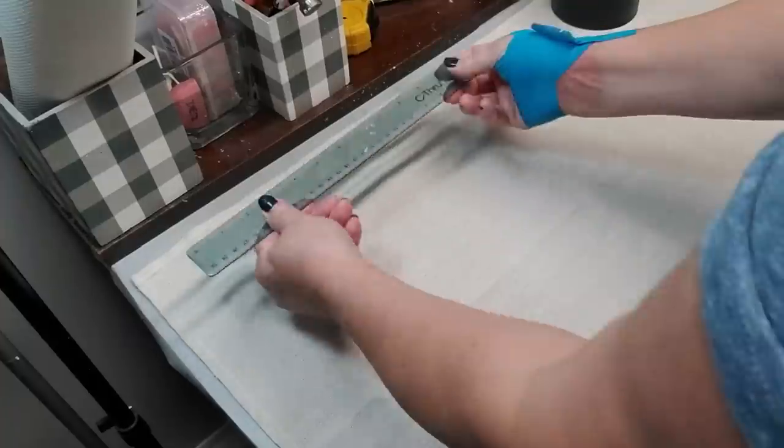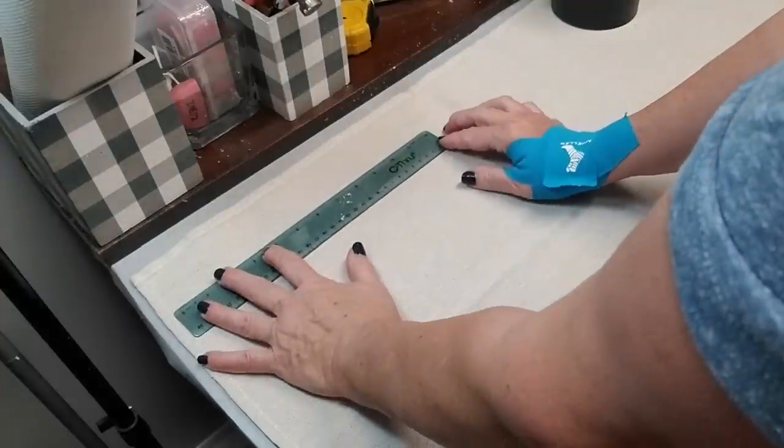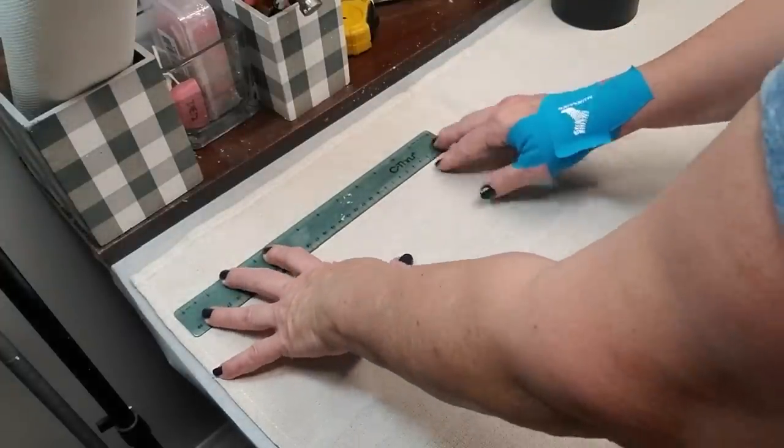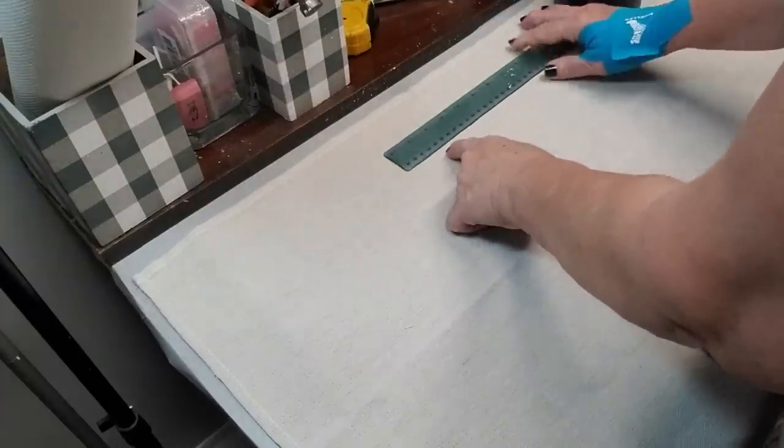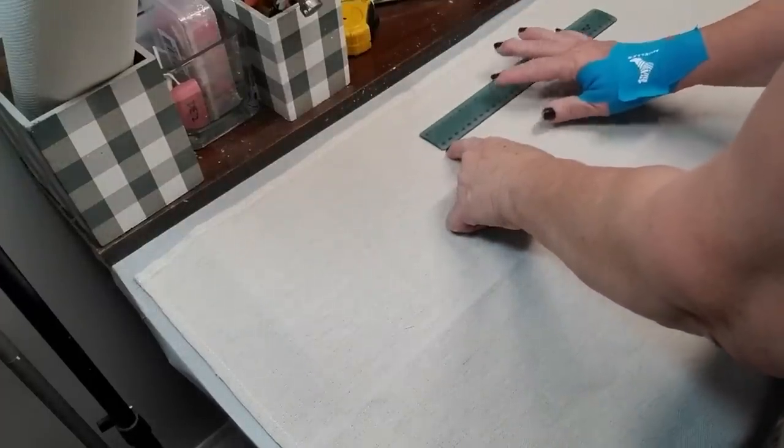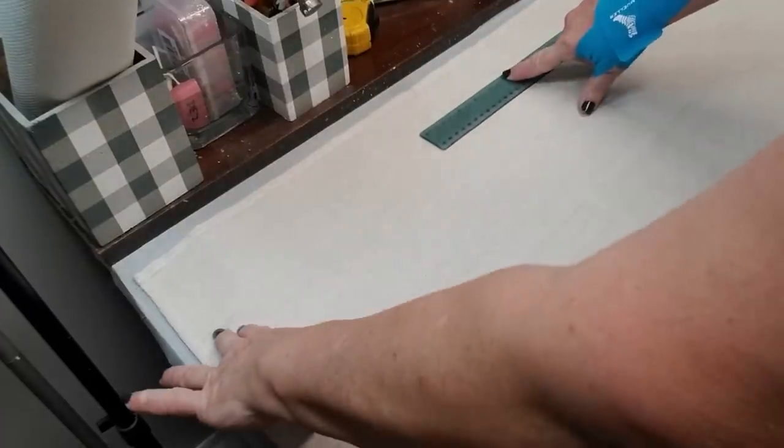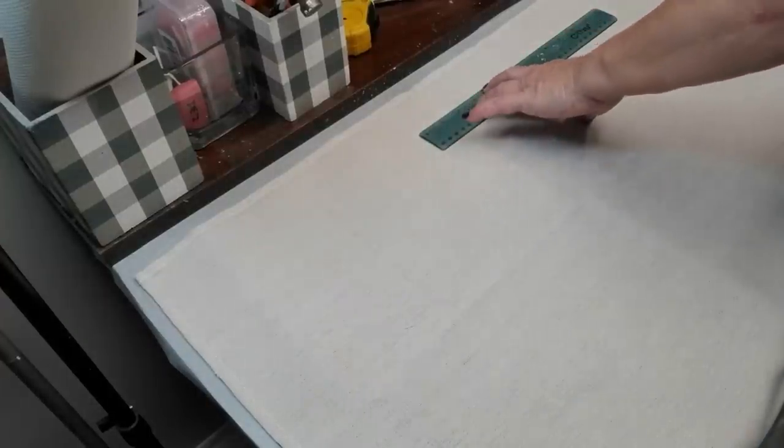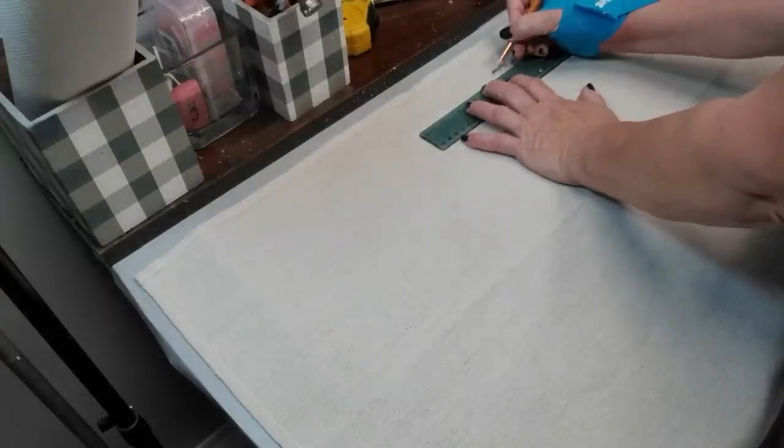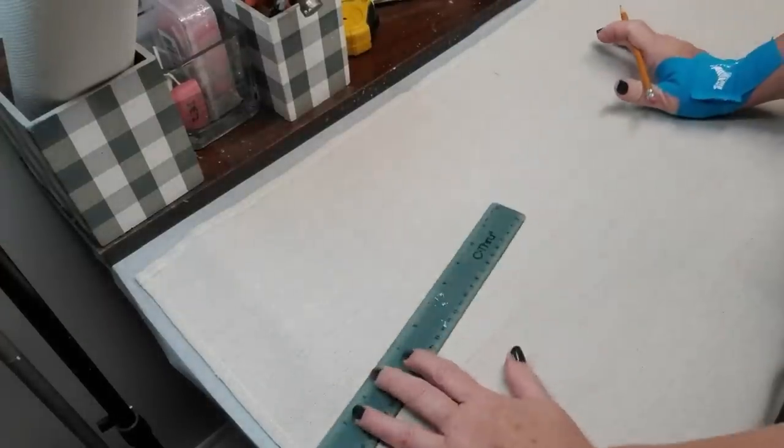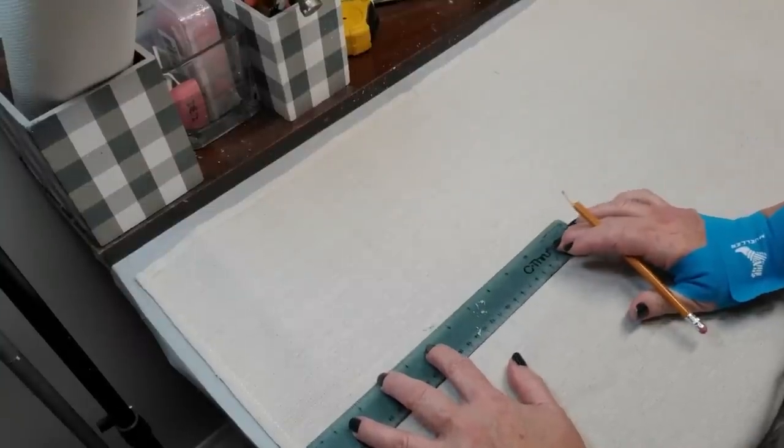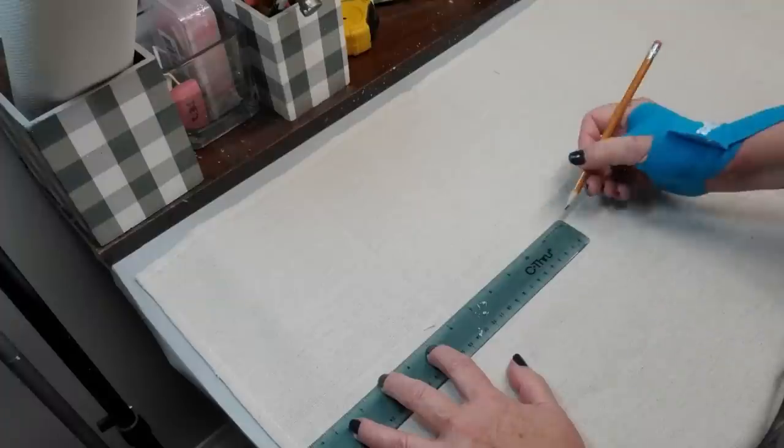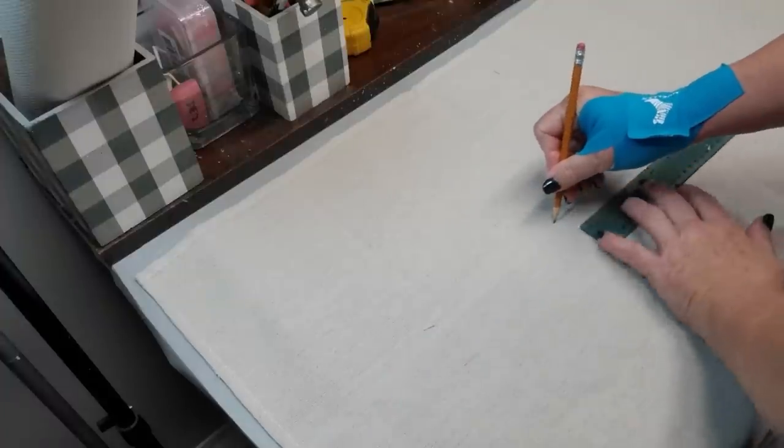For this project I'm just going to be using some drop cloth. I did pick this up at my local dollar store and it was four dollars for three feet by six feet I believe. You can also get this at hardware stores and probably you can find something like this maybe even at the thrift store. I'm measuring 18 inches wide and I'm going to do 12 inches deep or high or wide or whatever you want to call it.